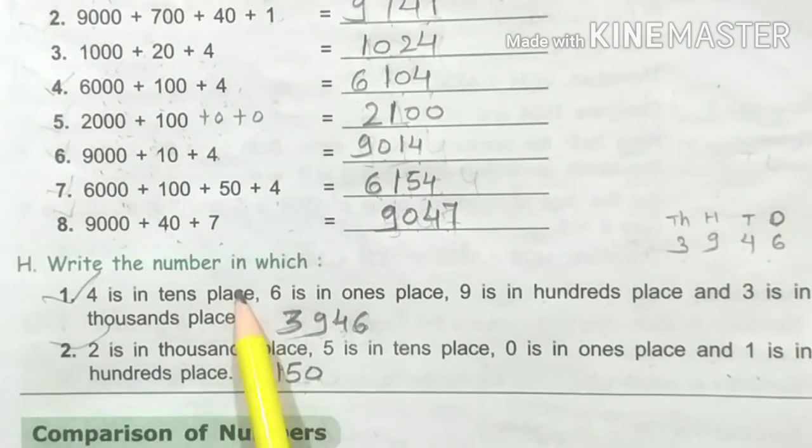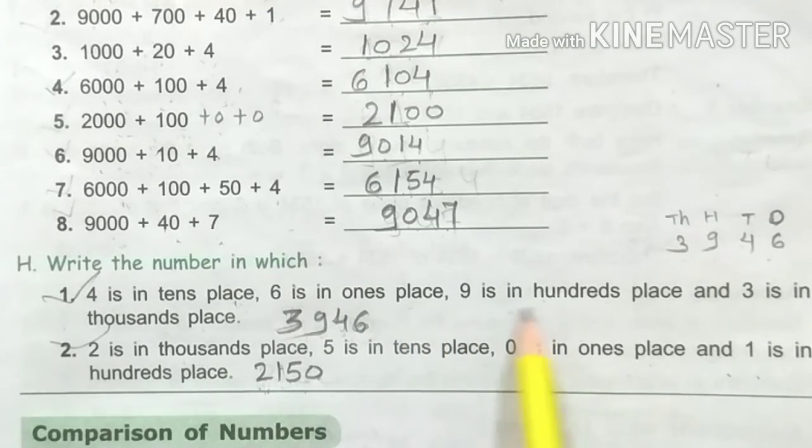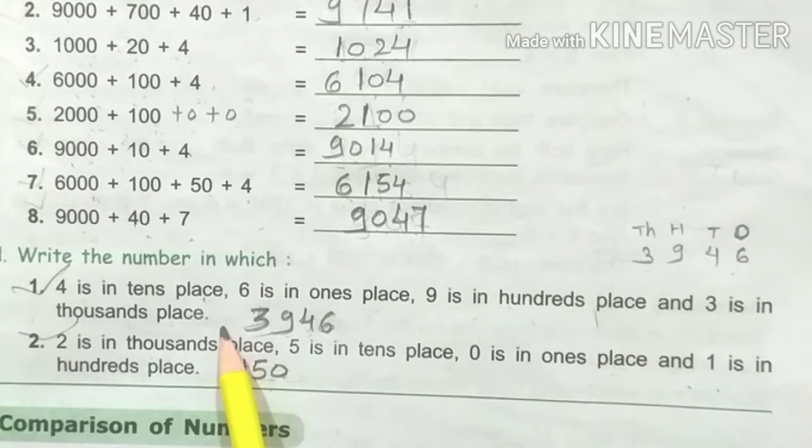Write the numbers in which: 4 is in tens place, 6 is in ones place, 9 is in hundreds place, and 3 is in thousands place.